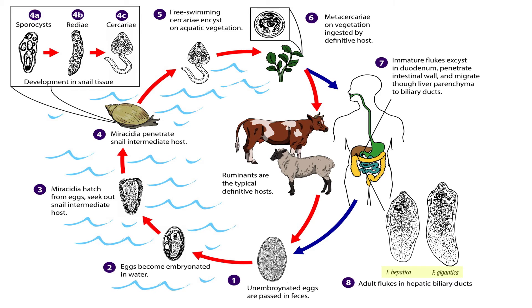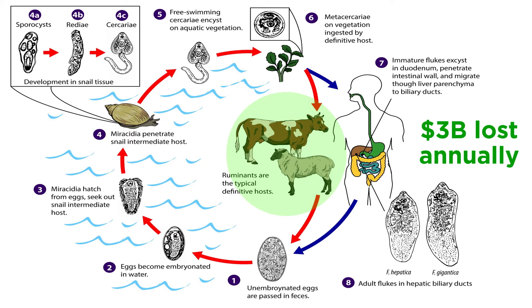Some, like the liver flukes Fasciola hepatica and F. gigantica, are a major global issue for livestock in terms of mortality, morbidity, and production losses. They cause an estimated annual cost of $3 billion to the global economy, which is likely a significant underestimate, and they are a significant cause of human disease in some developing countries.